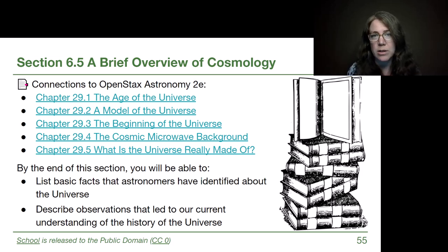I haven't been reading out the learning outcomes at the start of each section, but I want to here because I want to make sure you understand that we're not trying to go into a lot of depth on this really intense topic. We want to list basic facts that astronomers have identified about the universe, and I will be building a pyramid of these basic facts that will show up multiple times on the slide. And we want to describe the observations that led to our current understanding of the history of the universe, and that's consistent with our desire to always know why we think the things that we do in this course.